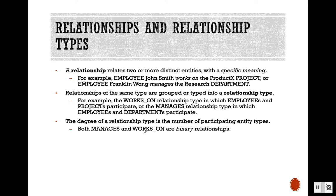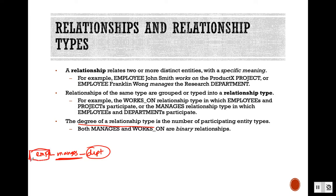The degree of a relationship type is the number of participating entity types. If the relationship connects only two entities, it is a binary relationship. For example, 'employee manages department' — the relationship 'manages' has two entities. We can think of the relationship as an operator and employee and department as the two operands, making it a binary relationship.